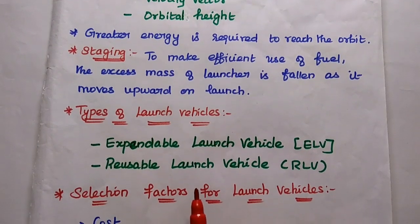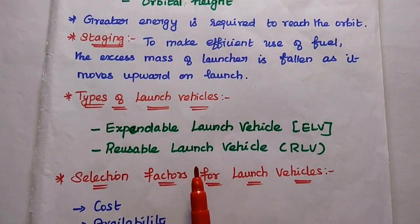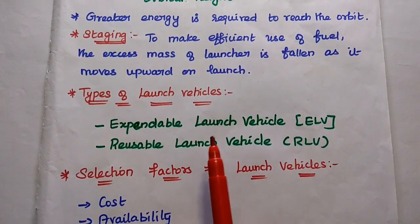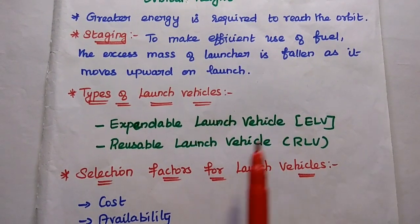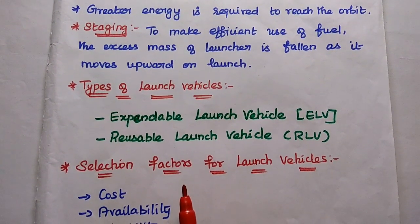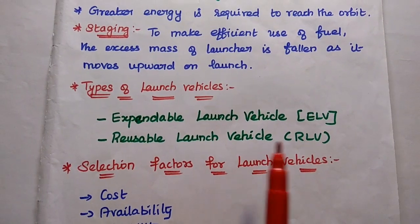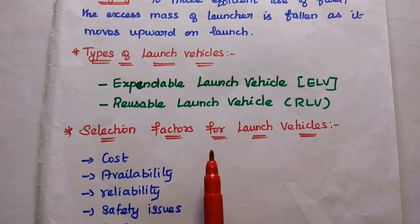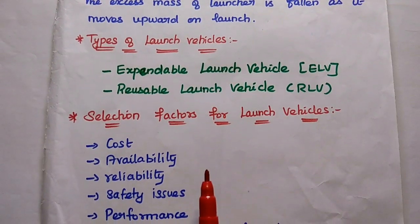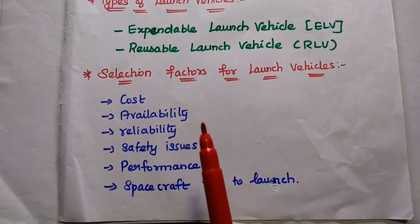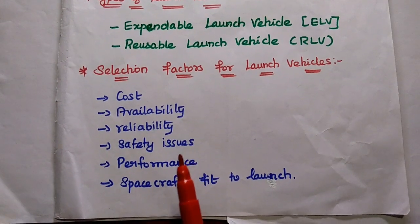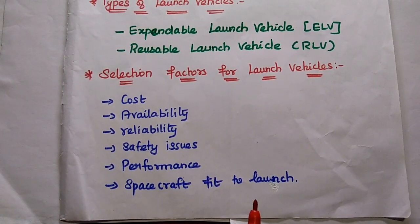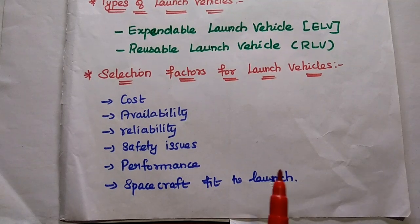Based on their functions, we can classify launch vehicles into two types: one is expendable launch vehicle (ELV), and the next one is reusable launch vehicle (RLV). There are certain selection factors to consider for launch vehicles: cost, availability, reliability, safety issues, performance, spacecraft fit to launch, flight proven, etc.